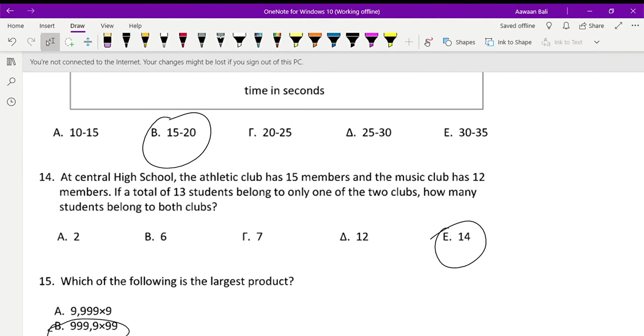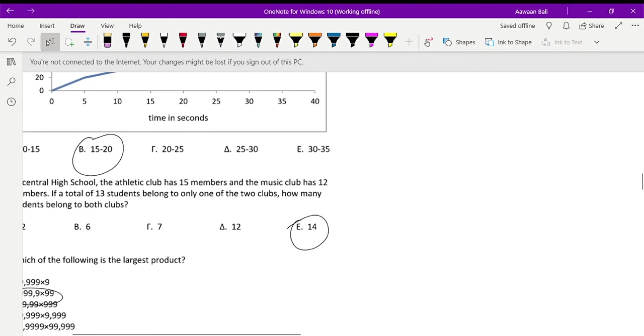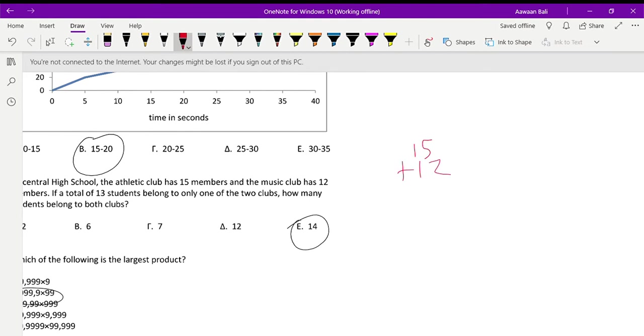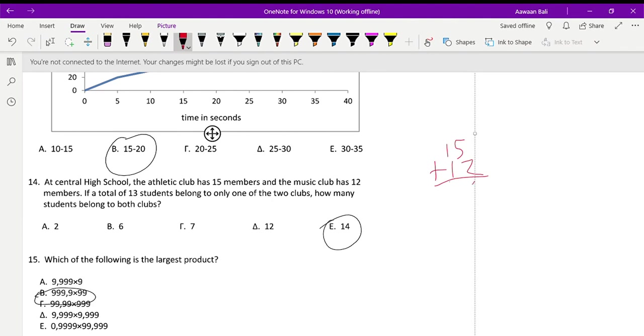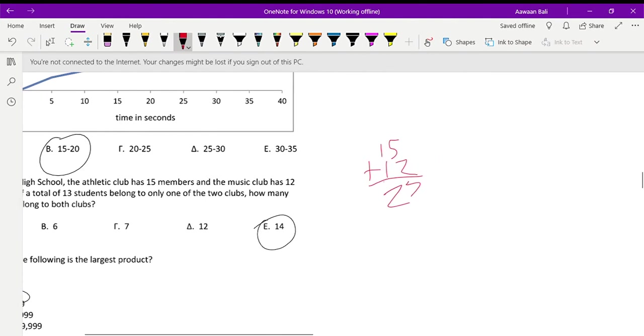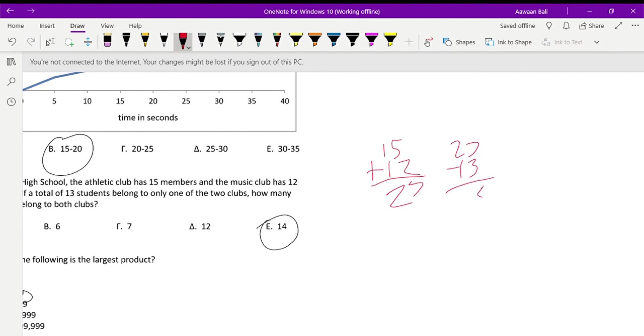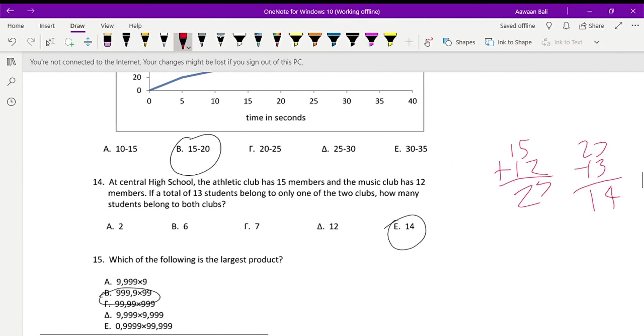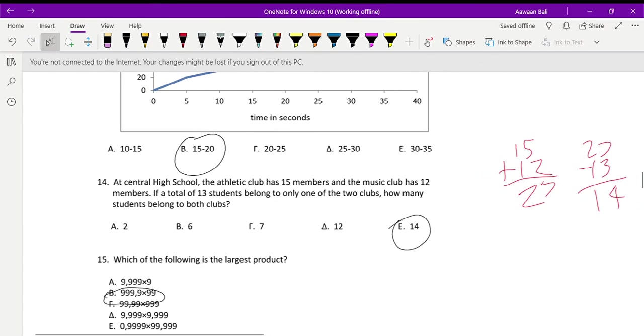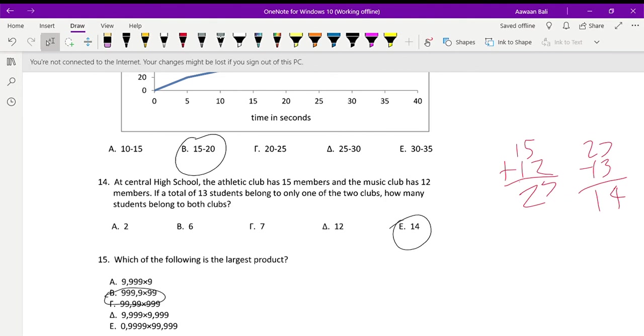Question number 14. At Central High School, the Athletic Club has 15 members and the Music Club has 12 members. If a total of 13 students belong to only one of the two clubs, how many students belong to both clubs? First you have to find the number of members. So 15 plus 12 is 27, so there are 27 members. So 13 members only belong to one of the two clubs, which leaves 14 students which belong to both clubs. So that means the answer is 14, eta. You just have to find the number of members, minus that by the people we know that are only participating in one club, and we'll have the rest. So the answer is eta, 14.